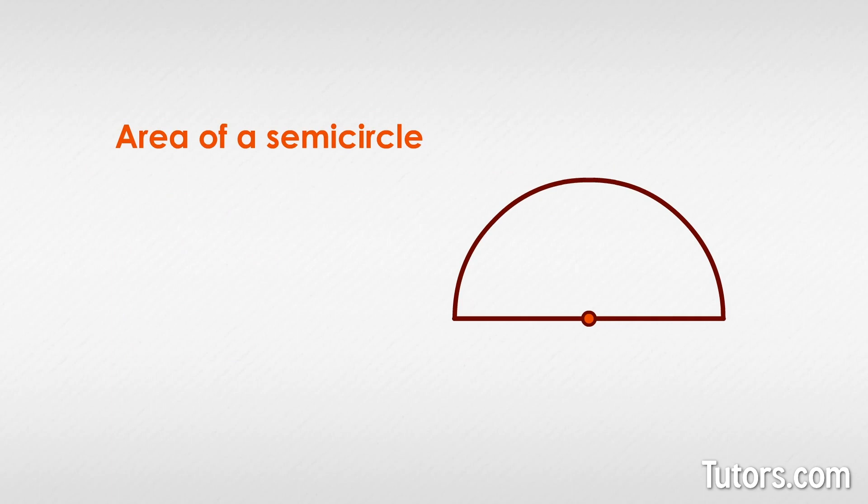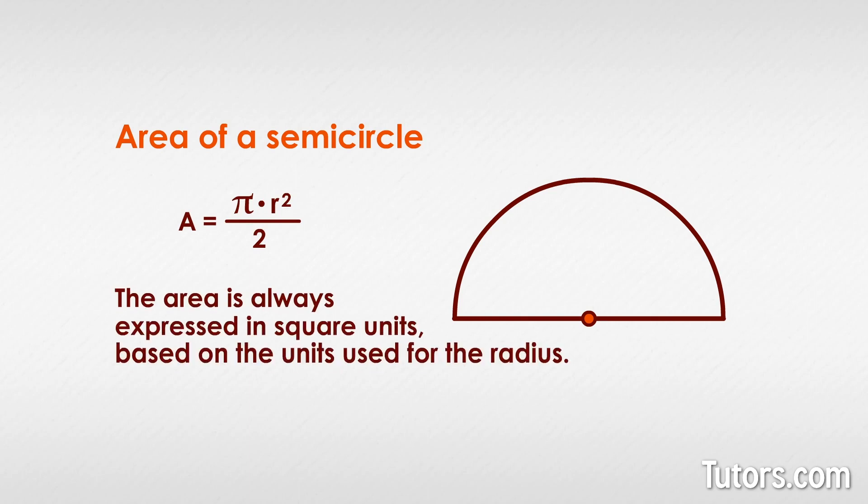You find the area of a semicircle by plugging the given radius into this formula: A equals πr squared divided by 2. The area is always expressed in square units based on the units used for the radius.